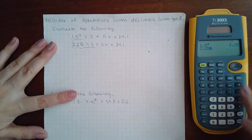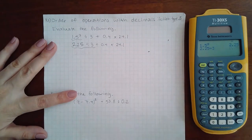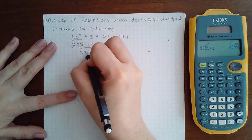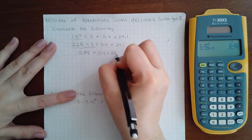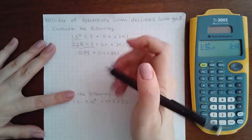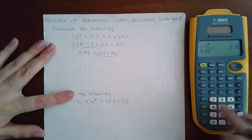2.25 divided by 3, and I get 0.75. Then I still see another multiplication, so I've got to work on that side.